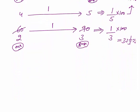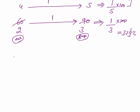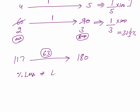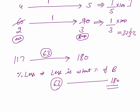When numbers are not simple, apply the basic method without ratio. For example, 117 is how much percent less than 180. First calculate how much less: 117 is 63 less than 180. Percentage less equals less is what percent of base, so I need to calculate 63 is what percentage of 180. 10% of 180 is 18. I need to reach 63.